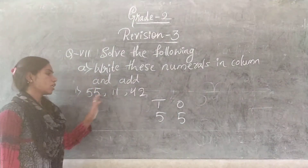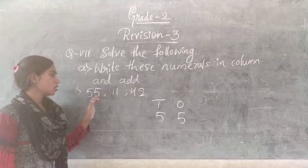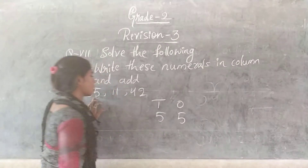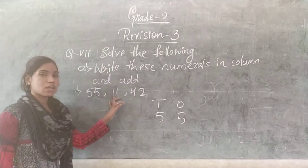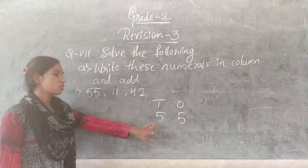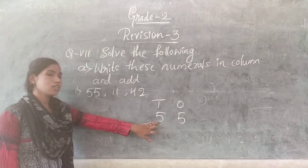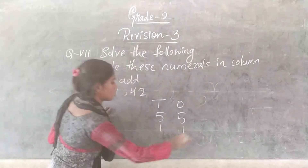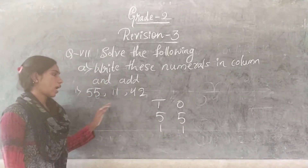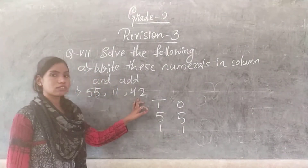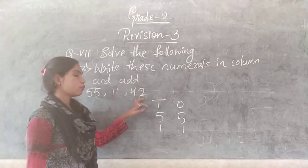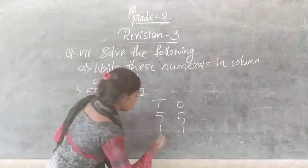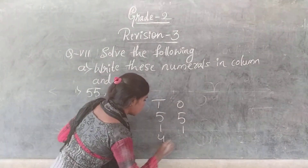The next number is 11 — write it below 55. And the third number is 42 — write 42 below the number 11.